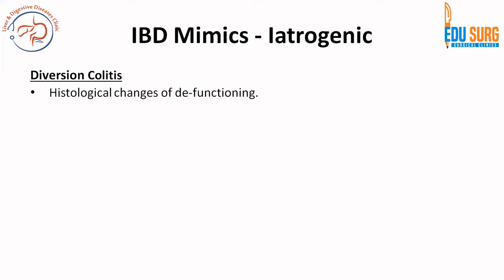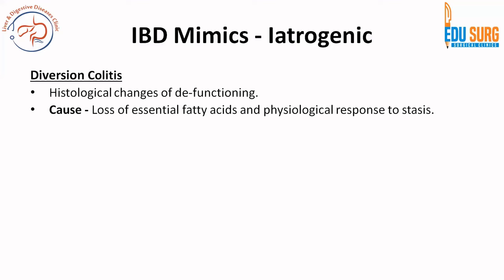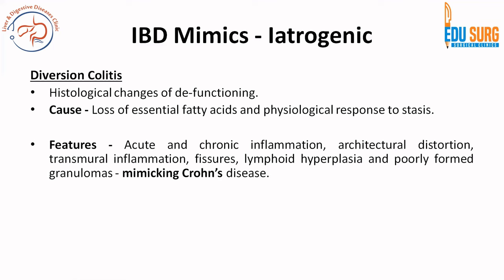What is diversion colitis? Once we have done a stoma at some point, the defunctioned part of the bowel has lost access to essential fatty acids and there is stasis of contents in that area. Diversion colitis is basically histological changes of defunctioning as a physiological response to stasis and loss of essential fatty acids. The features can be acute and chronic inflammation, architectural distortion, and transmural inflammation — so when we have transmural inflammation, the mimic is Crohn's disease.